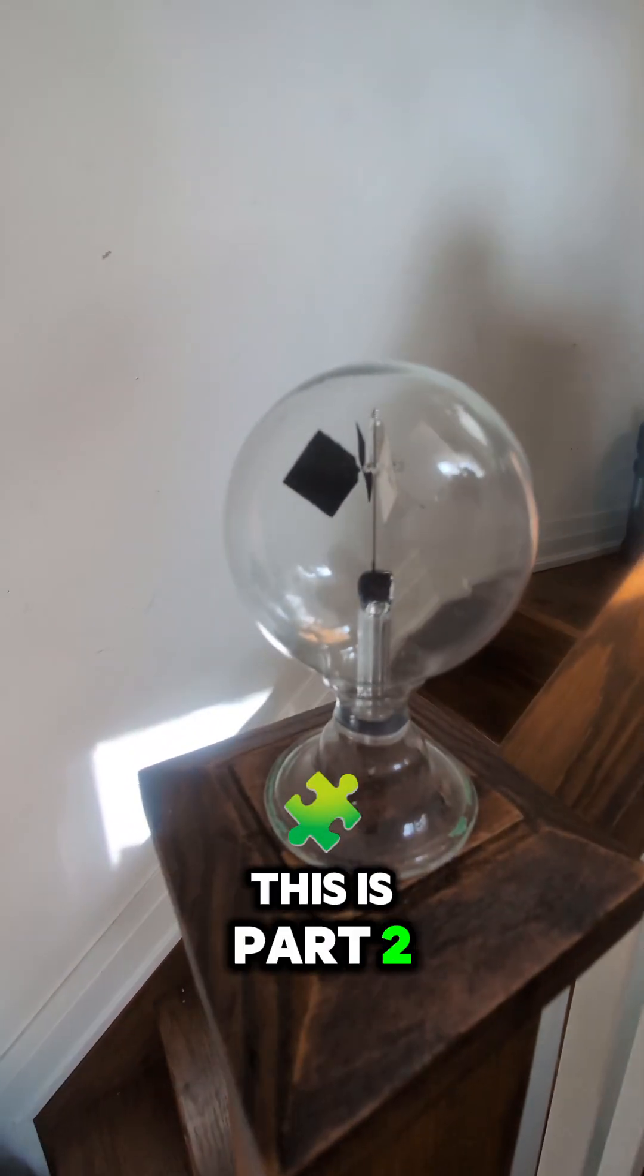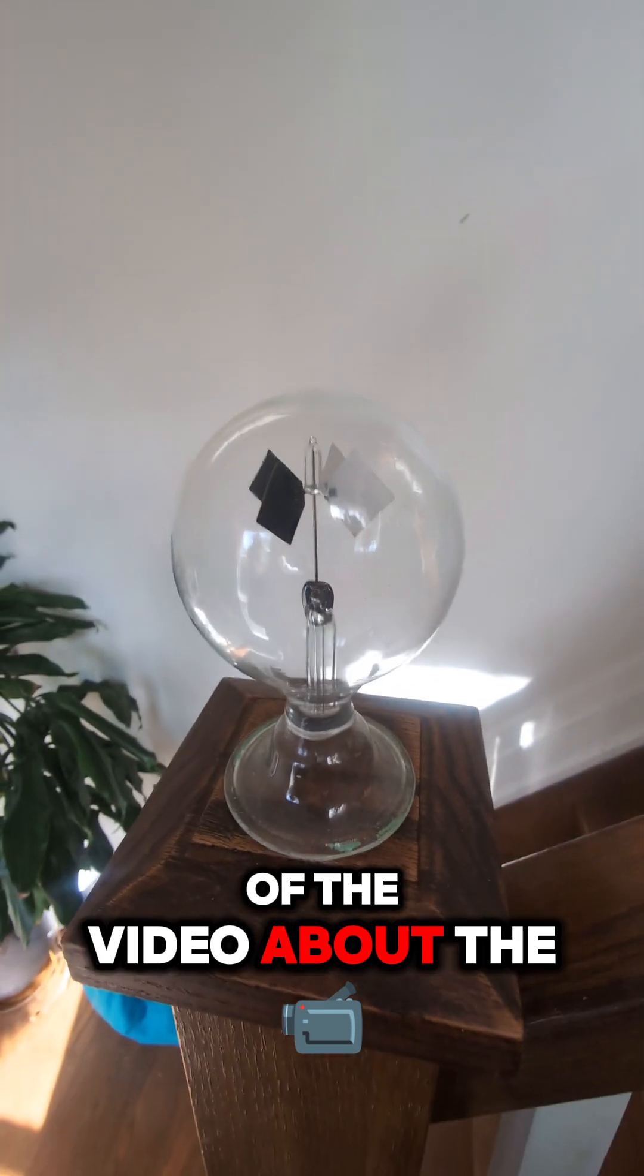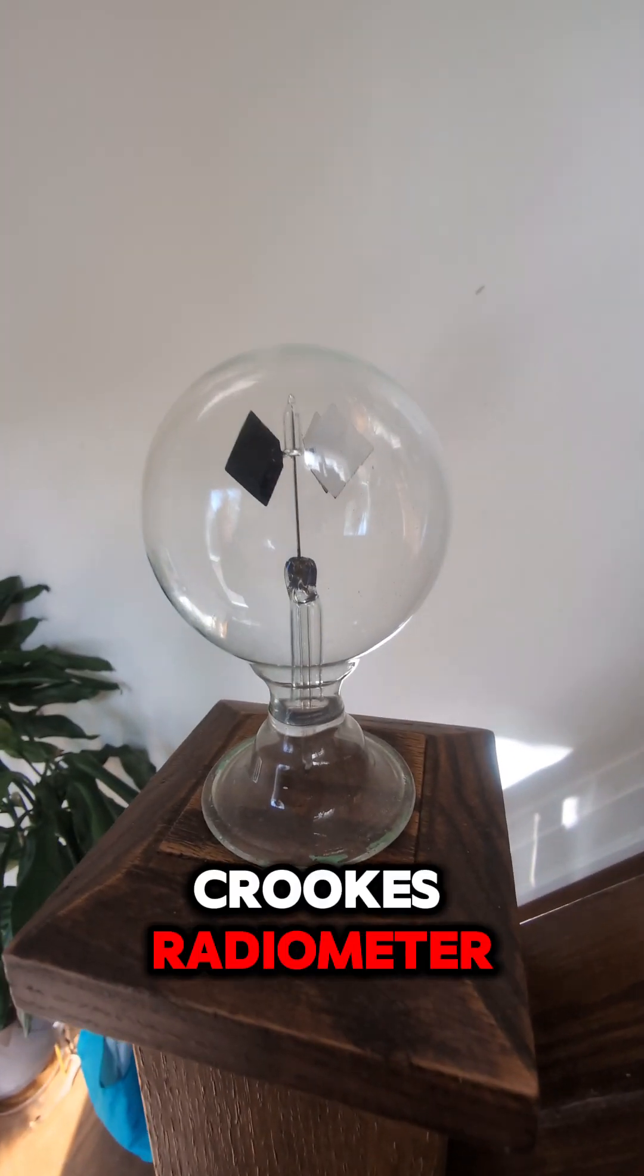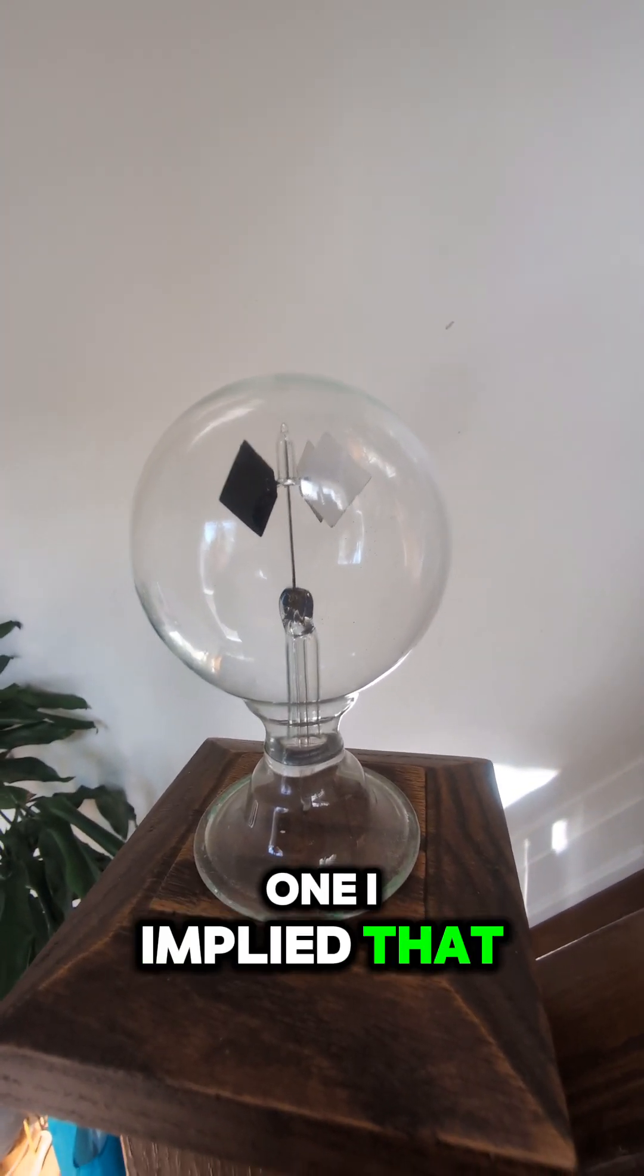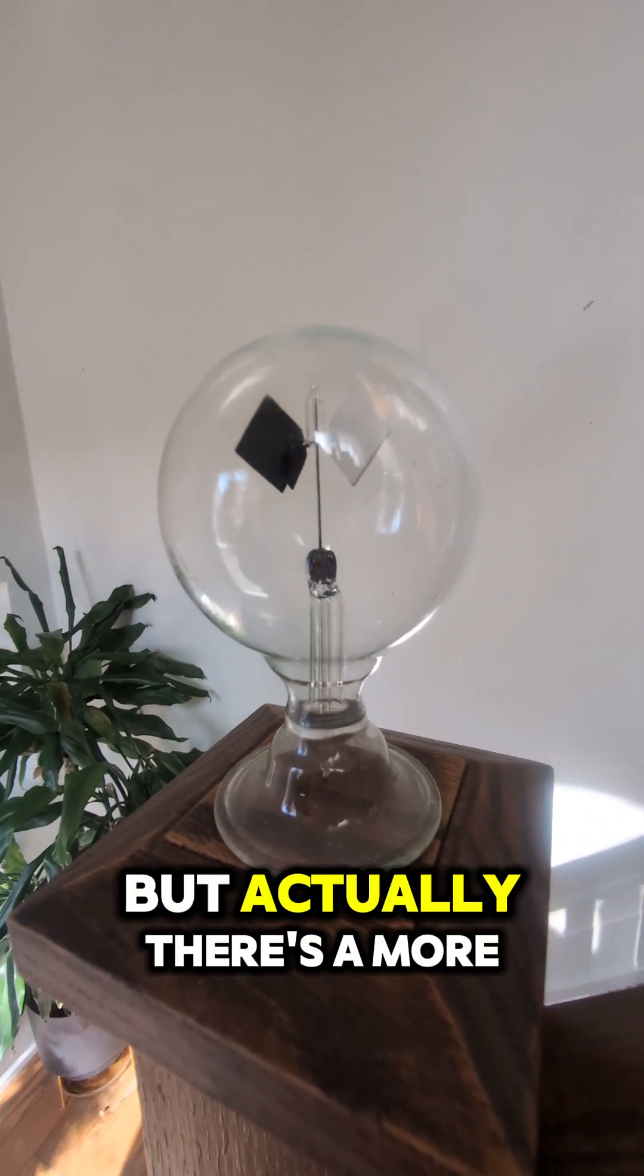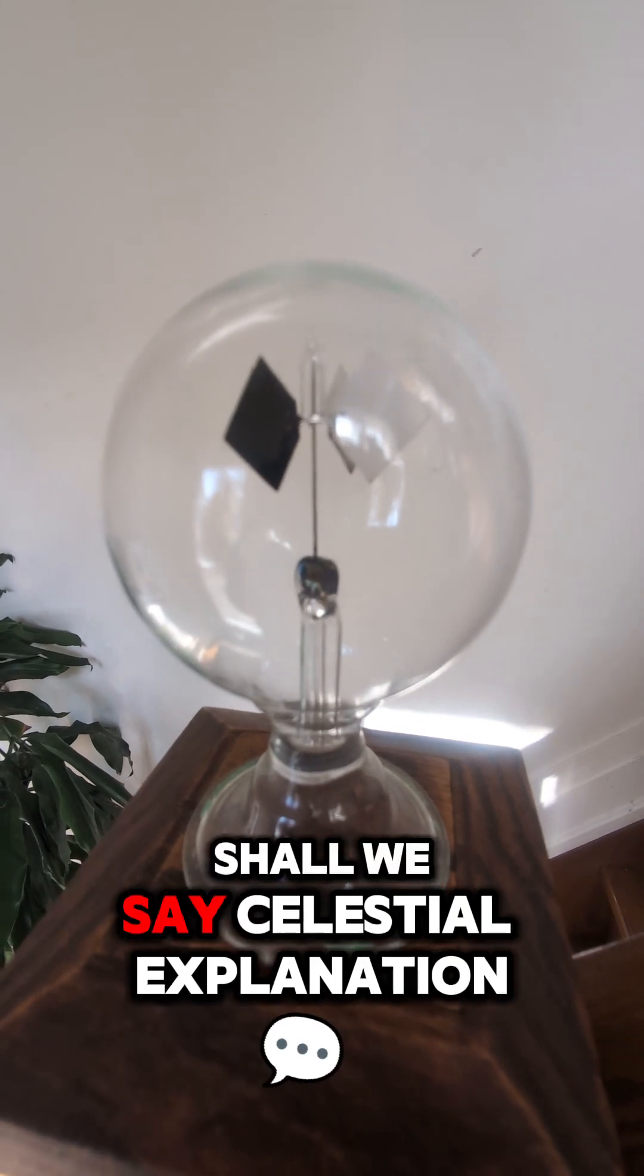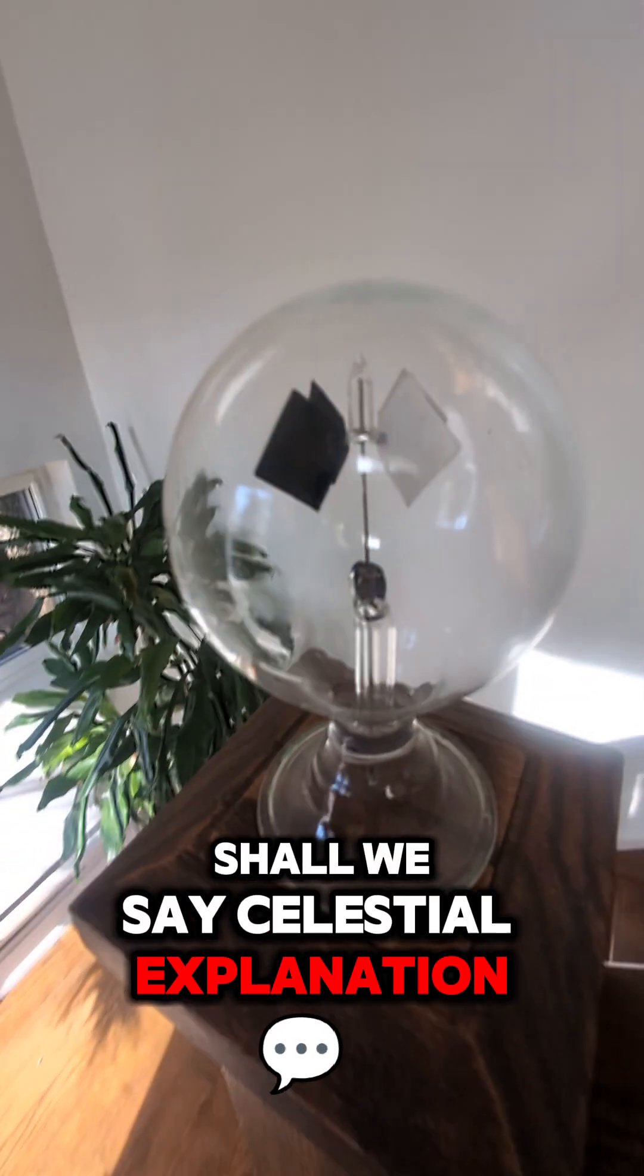Hello, my friends. This is part two of the video about the Crookes radiometer, and in the last one I implied that it is a perpetual motion machine, but actually there's a more, shall we say, celestial explanation.